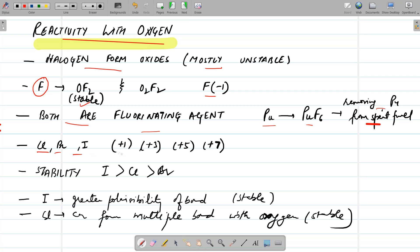Chlorine, bromine, iodine. They show plus 1, plus 3, plus 5, plus 7 oxidation state in their oxides. And stability of oxide of iodine is more than chlorine and bromine oxides are least stable. So, why oxides of iodine is more stable? Because there is greater polarizability of bond due to large size of iodine. So they are more stable.